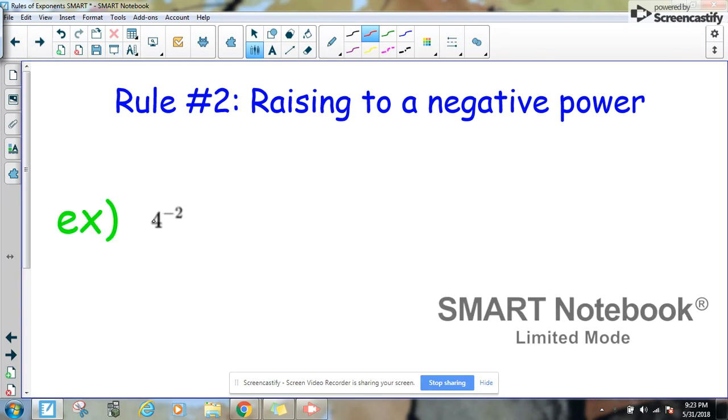Here's an example. 4 raised to the negative 2. Now there's no fraction bar here, so I'm going to add one. And then we've got the negative exponent that has to be dealt with.